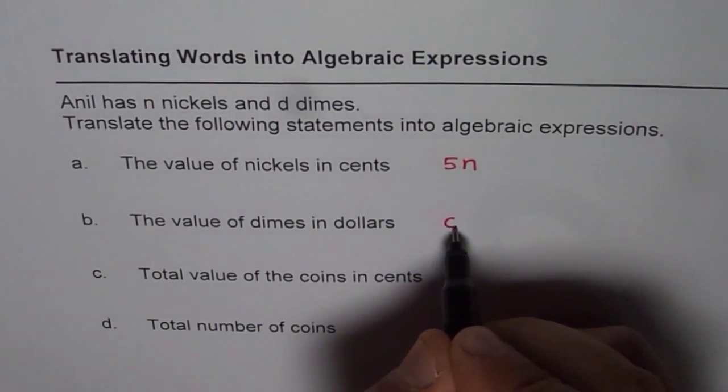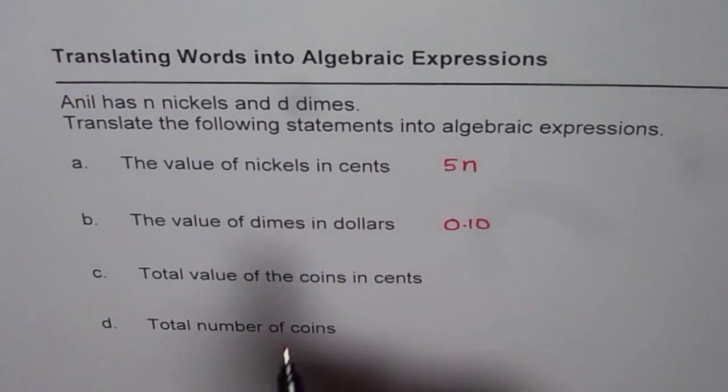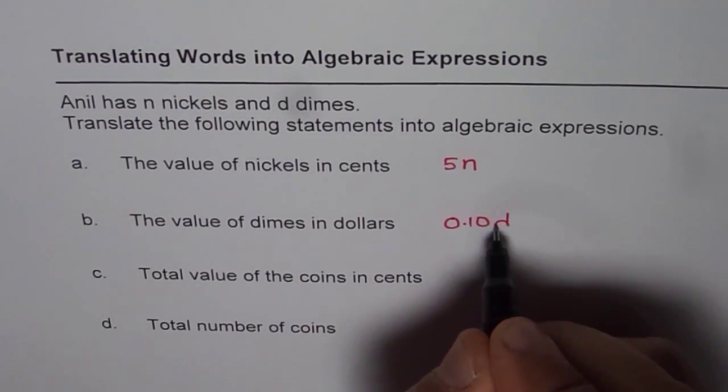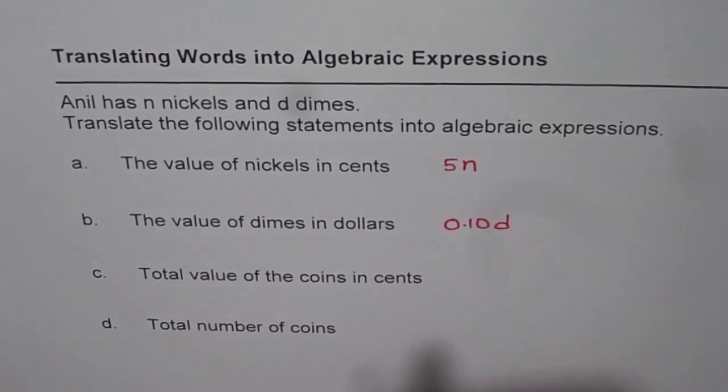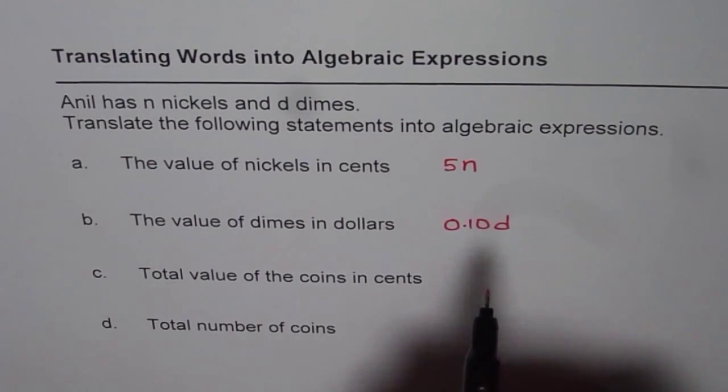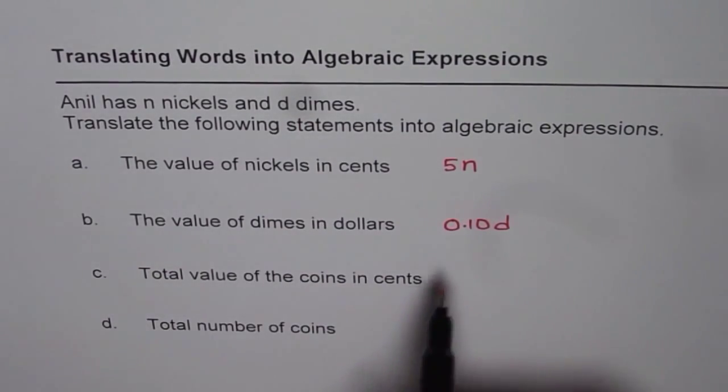So, in dollars, this will be 0.10. And since there are d number of dimes, we have 0.10d. That represents the value of all these dimes in dollars.